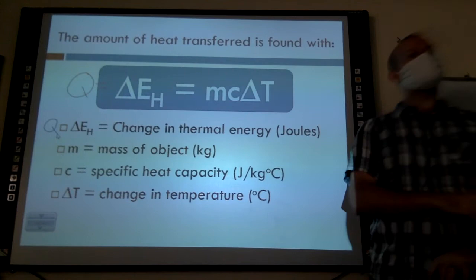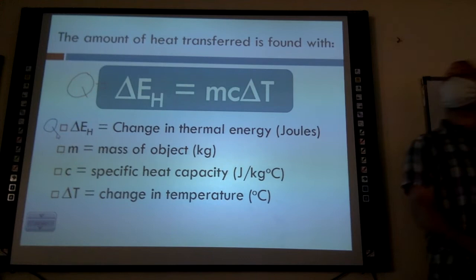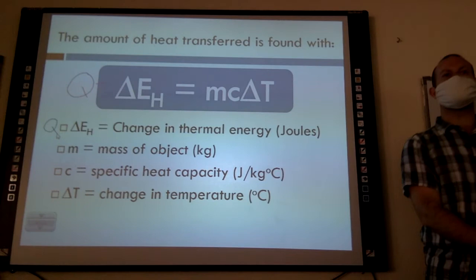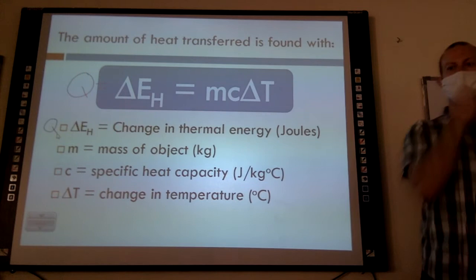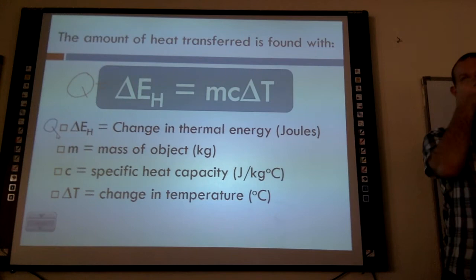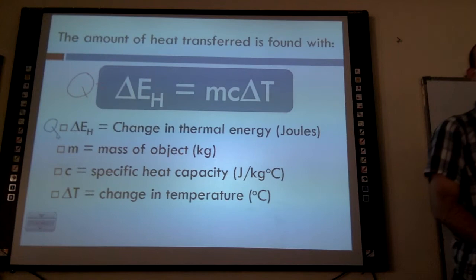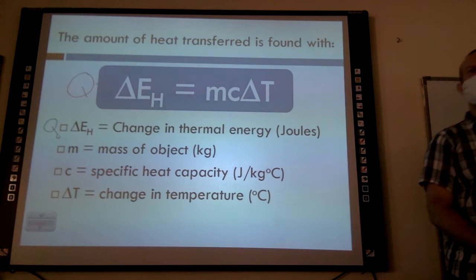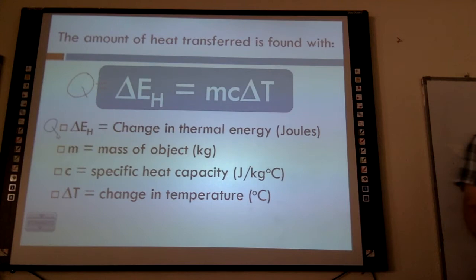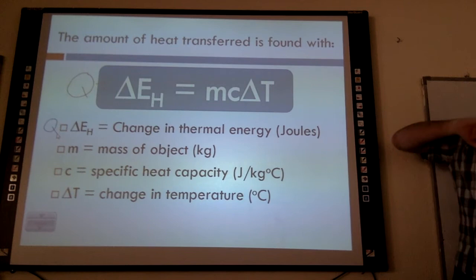Let's go back to coefficient of friction for a moment. If I say rubber has a high coefficient of friction, what does that tell you? It has a lot more friction — the higher the coefficient, the greater the friction. If you take a block of ice and rub it on a table, that's a low coefficient of friction. Specific heat capacity works similarly.